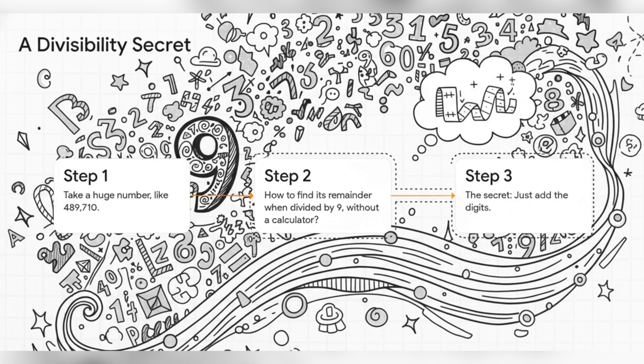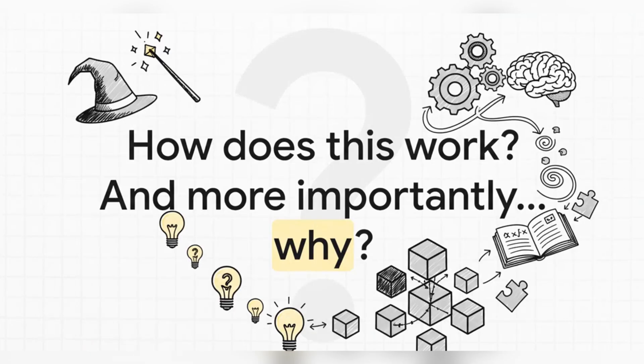And get this: that is the exact same remainder you get from that original massive number. Insane. Okay, this is starting to feel a little bit like sorcery, right?